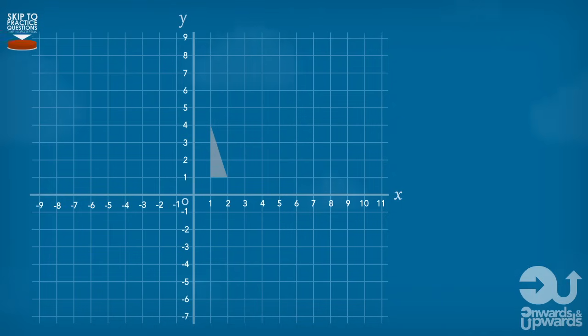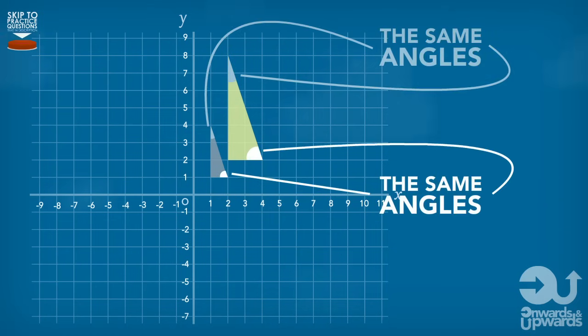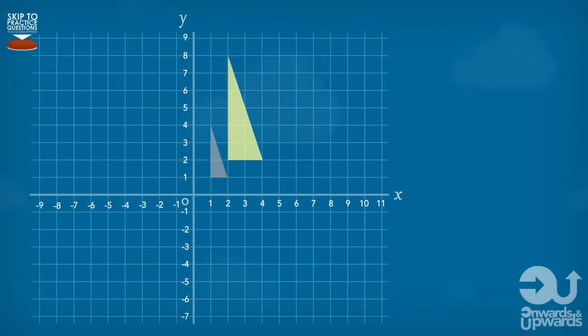Enlargement, simply put, is making the size of a shape bigger or smaller. In enlargement, the size of the shape changes, but we always keep all the angles and length ratios the same. Basically, what that means is that if we enlarge the shape, the corresponding angles are the same. And although the lengths have changed, how big they are in relation to each other remains the same.